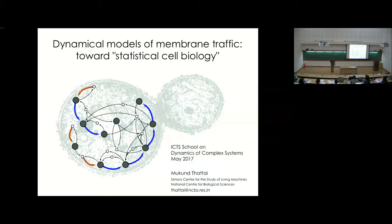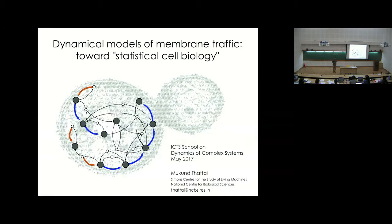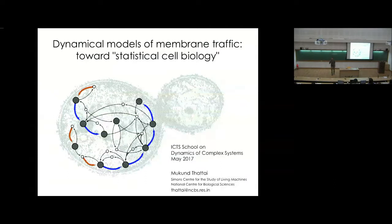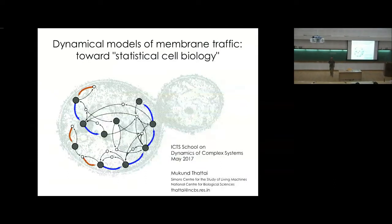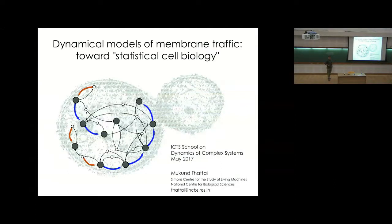I'm going to be talking about something slightly different. A lot of work in computational biology still focuses on metabolic networks and genetic regulation, but there's a whole spectrum of computational biology outside these two subjects — for example, population genetics. Here's another example which is increasingly common and a growing area: looking at what's called membrane traffic.